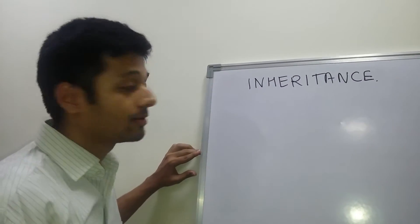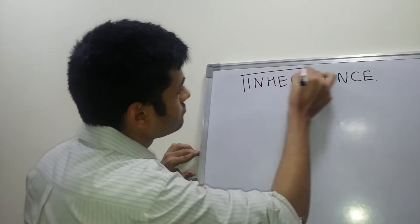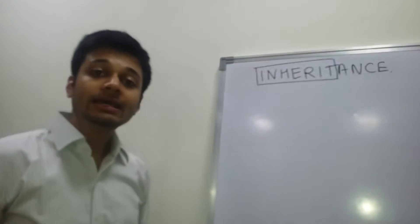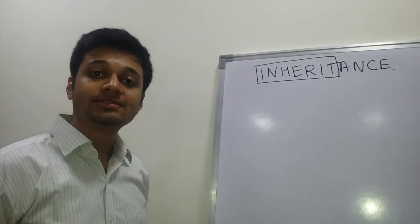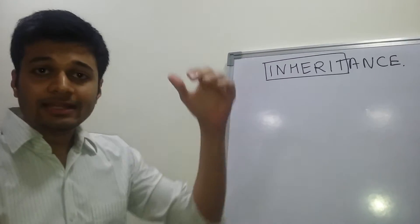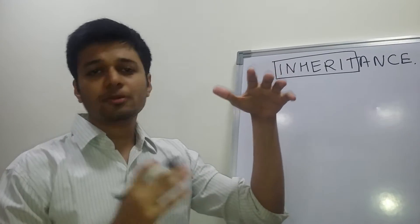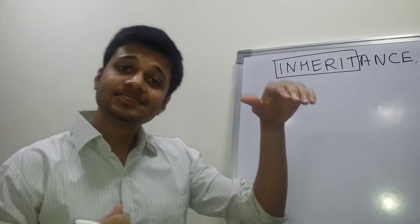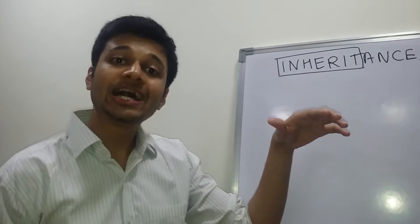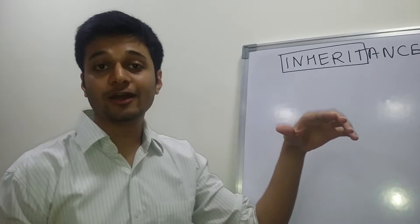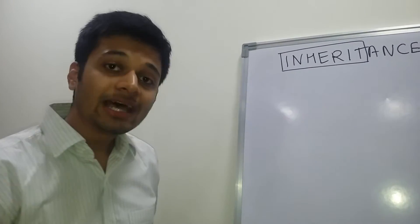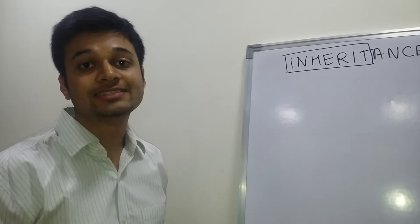Inheritance has come from the word inherit. Inherit's meaning is receiving characteristics from something else, from some other object. For example, there is a main object which contains all the properties and values, and there is a second object which has been derived from the main object. The second object which has been derived is called the derived class, and the main object can be called the base class. Let's have a look at the base class and derived class definition.